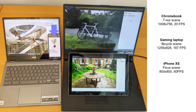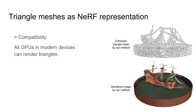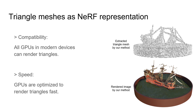We present MobileNeRF, a NeRF that can run on a variety of common devices in real-time. In our approach, we use triangle meshes as a NeRF representation, as it not only provides superb compatibility across different devices, but also makes our method very fast to run.